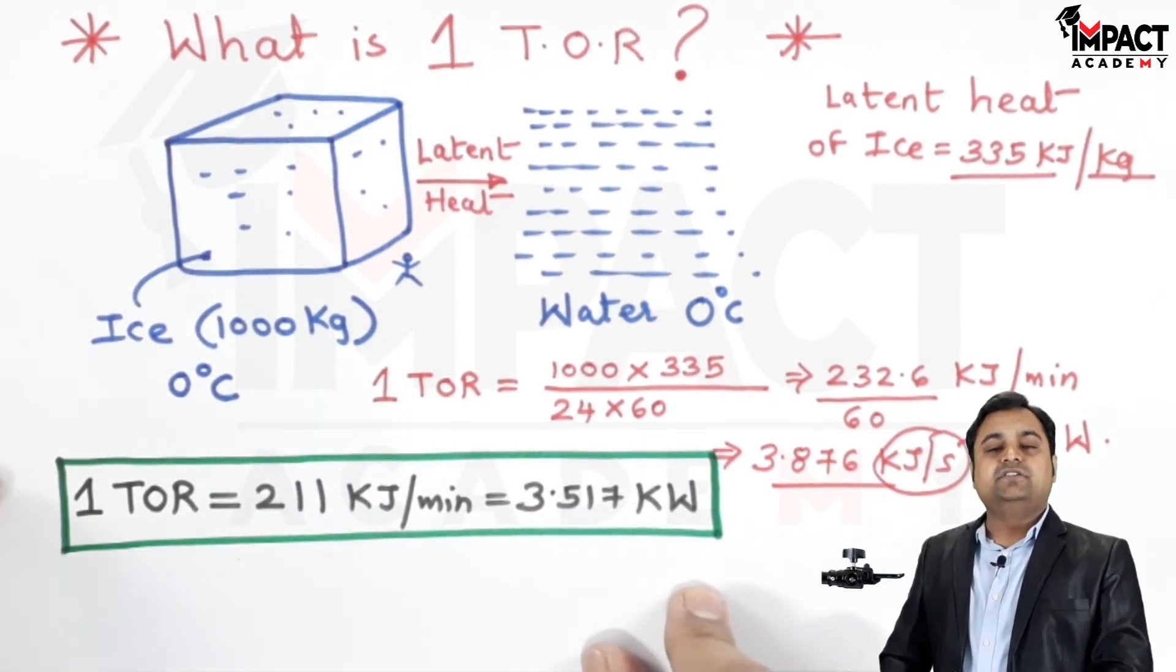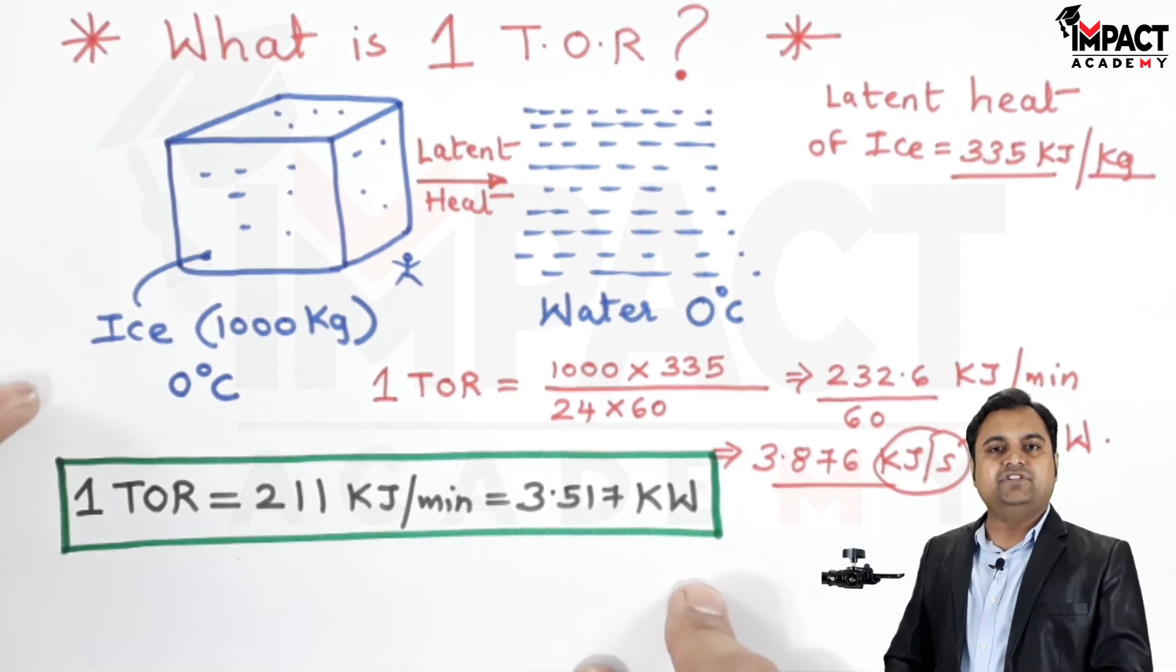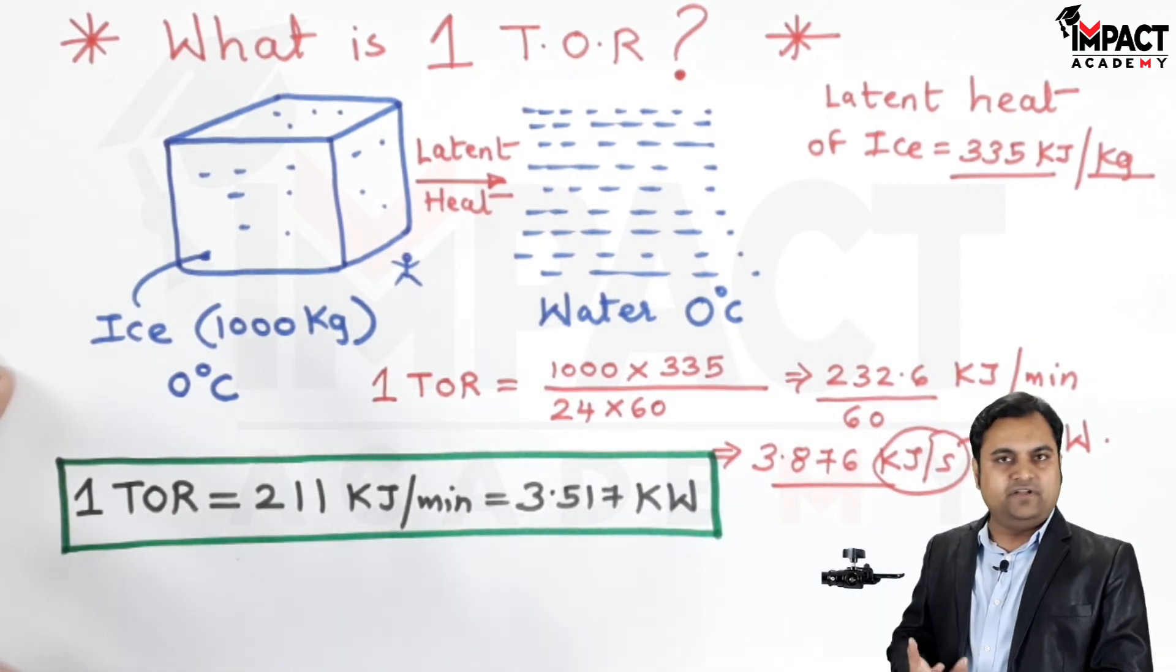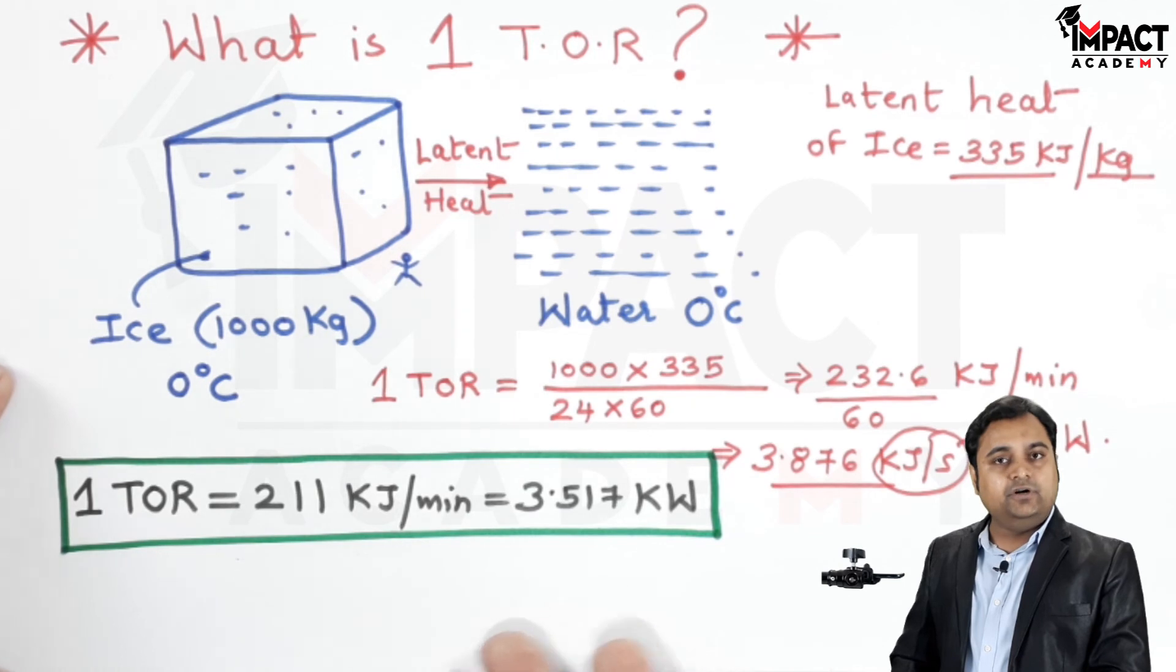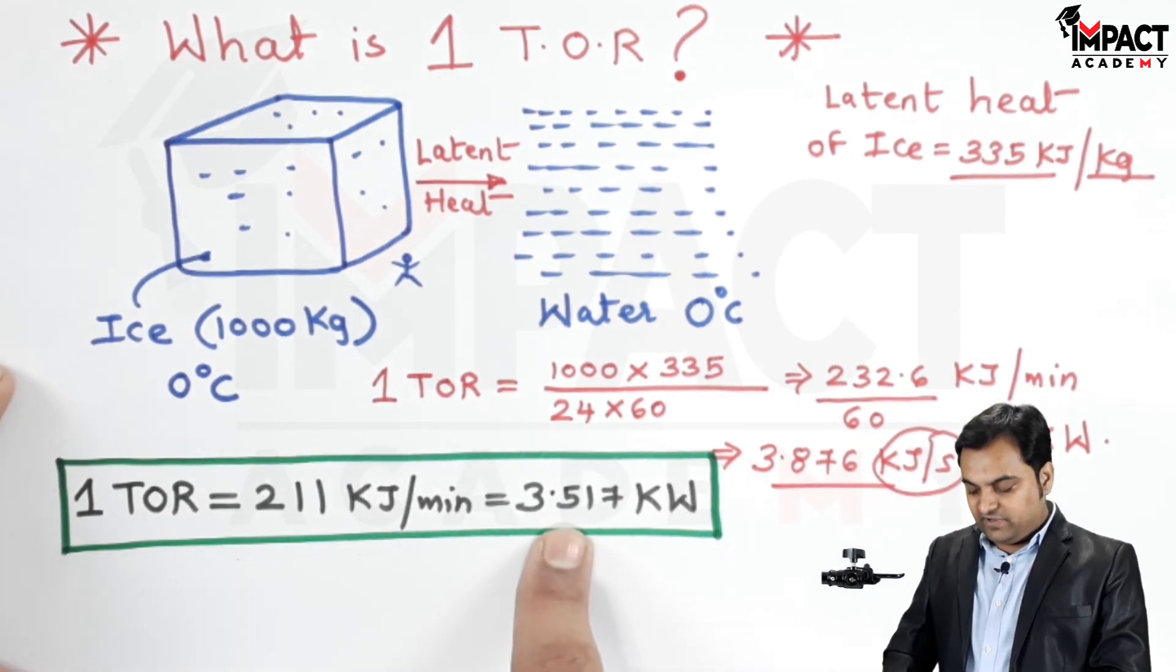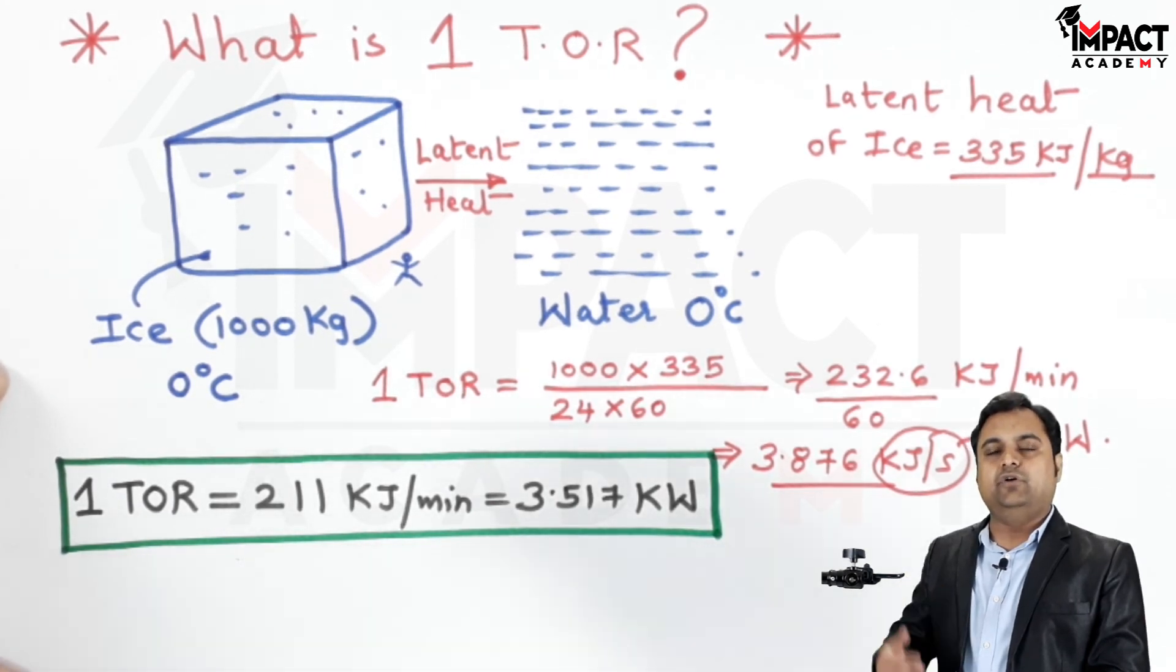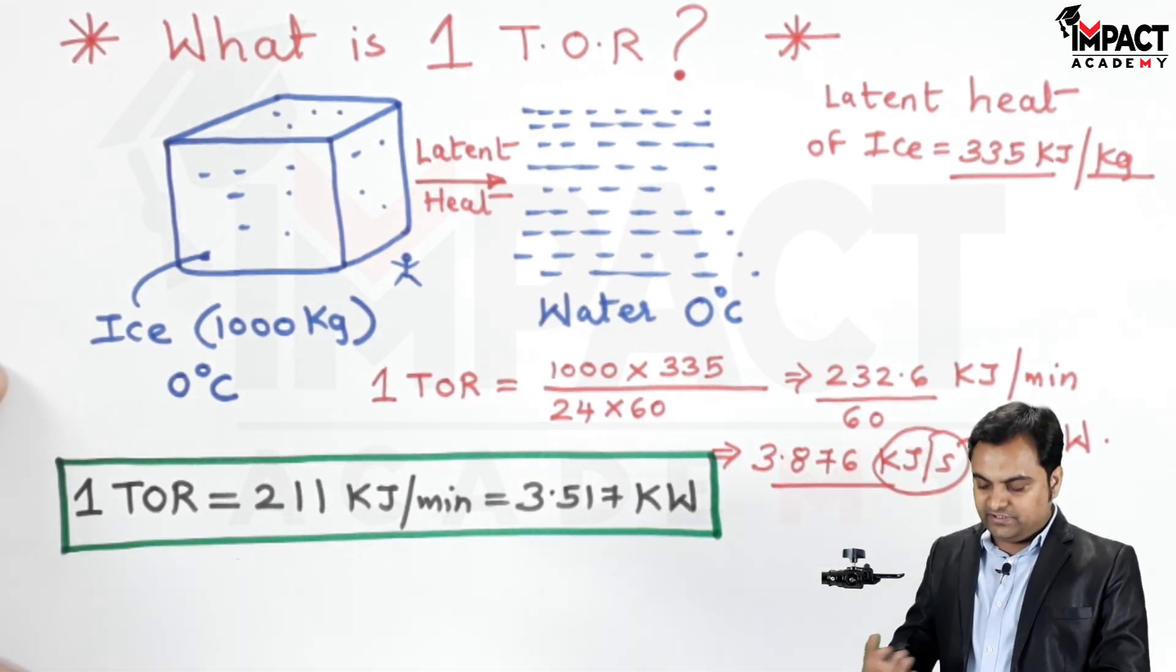Similarly, like when we go for purchasing AC, we purchase the AC in terms of ton. So that ton of refrigeration is nothing but the refrigeration effect as explained to you over here. If it is two tons, then this value gets doubled. If it is three tons, again multiply this by three, so the value of refrigeration effect will go on increasing.